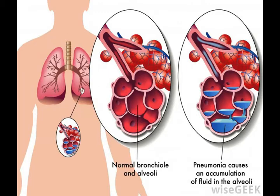The bronchial tubes are the largest parts of this structure. There is one bronchial tube connected to each lung. The connection occurs in an upper portion of the lung known as the hilum. Although the right and left bronchial tubes perform the same tasks, they are not identical. The right bronchial tube, for example, is shorter than the left.